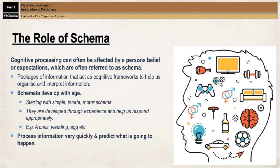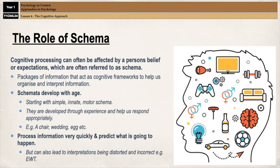Our schema process and catalogue information very quickly via cognitive shortcuts like assumptions and stereotypes. Given the amount of information we are confronted with on a daily basis, we'd otherwise be overwhelmed. However, the downside is that it can lead to interpretations being distorted. For example, in eyewitness testimony, schemata can lead to witnesses reporting their expectations of an event due to their schema filling in the blanks, rather than reporting what actually happened. Schema fill in the blanks and distort what we remember so that we aren't left with a blank memory.